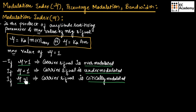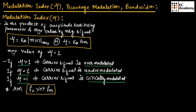If modulation index is equal to 1, then the carrier signal is critically modulated. You need to remember that in amplitude modulation, the carrier frequency should be very much greater than the frequency of the message signal for proper amplitude modulation.